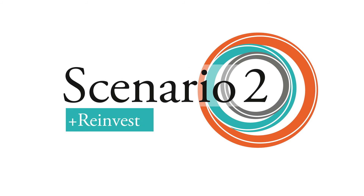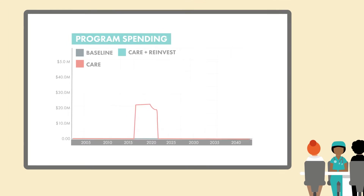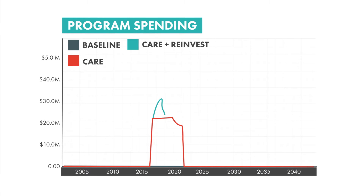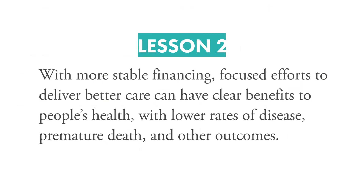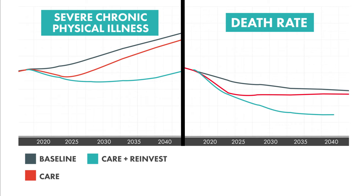What if half of the gains from lower health care costs were reinvested to sustain the effort? That is similar to new agreements currently offered by most insurers. This arrangement channels nearly five times as much money into the endeavor, which is enough to sustain program funding for all 25 years. The rebound in the pattern of care is largely gone. Our second lesson is: with more stable financing, focused efforts to deliver better care can have clear benefits to people's health, with lower rates of disease, premature death, and other outcomes. But the results plateau and do not grow as strong as we might hope.